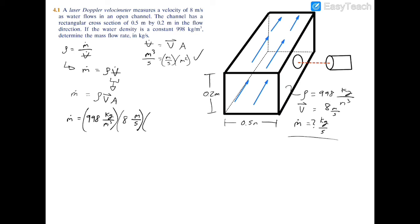Times the area, which would be 0.2 meters times 0.5 meters. As you can see, meter times meter gives you meter squared, meter squared times meter gives you meters cubed, and you have meters cubed on the bottom, so that cancels out. You have kilograms and seconds, so the unit is kilograms per second. When you multiply all this out, the mass flow rate equals 798.4 kilograms per second.